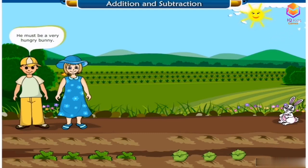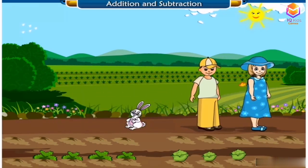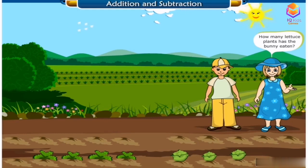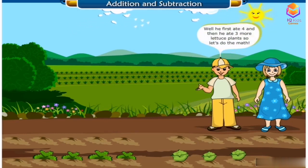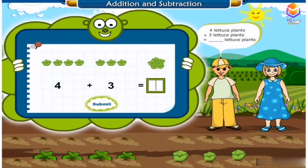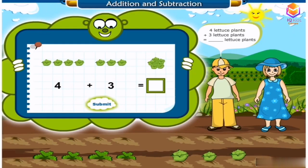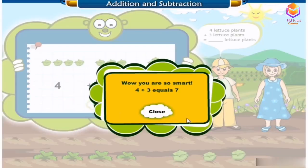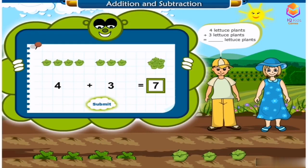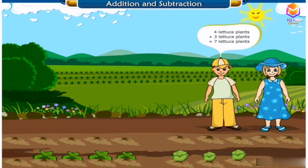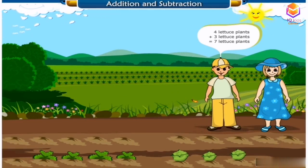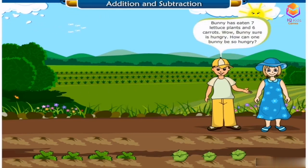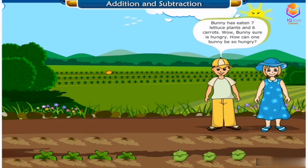He must be a very hungry bunny. How many lettuce plants has the bunny eaten? Well, he first ate four and then he ate three more lettuce plants. So let's do the math. Four lettuce plants plus three lettuce plants equals seven lettuce plants. Four plus three equals seven. Bunny has eaten seven lettuce plants and six carrots. Bunny sure is hungry.